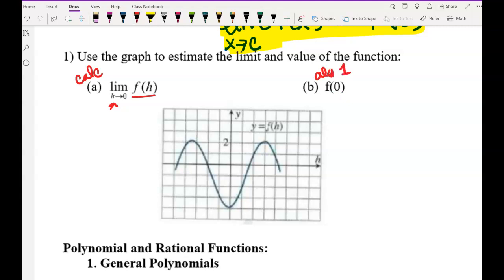So part (b) says find f(0), meaning that you're going to look when x equals zero and find where y is at. Now for the sake of simplicity, let's say negative one, negative two, negative three, negative four. So we're going to say this is negative four. So f(0) equals negative four.